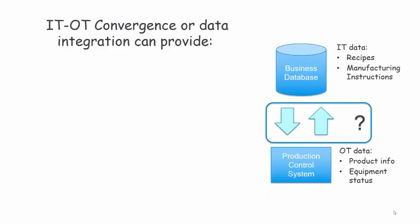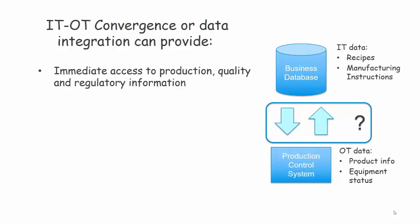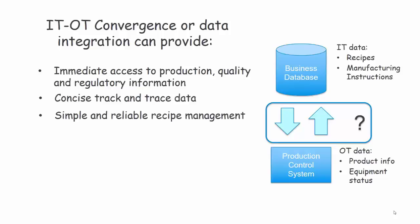IT-OT convergence, or data integration, can provide immediate access to production, quality, and regulatory information, concise track and trace data, simple and reliable recipe management, and optimized production via ERP.